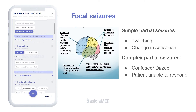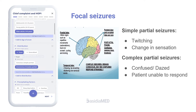Focal seizures, or partial seizures, affect only certain parts of the brain. They are categorized as simple and complex partial seizures. Simple partial seizures cause twitching or a change in sensation, such as a strange taste or smell. Complex partial seizures make a person with epilepsy confused or dazed, and the person will be unable to respond to questions or directions for up to a few minutes.